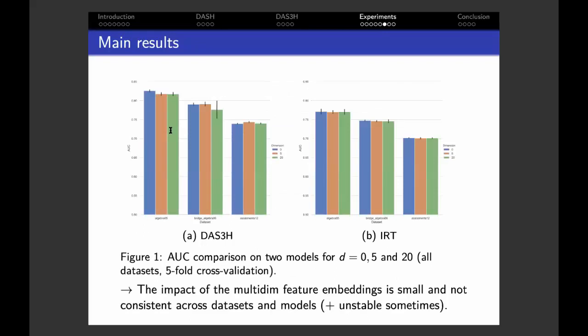As I told you previously, here on each figure, each group of three bars represents the predictive performance of the student model on a given dataset for every embedding dimension. For example, the blue bar for an embedding dimension of zero, orange bar for five, and green for twenty. Here you have the AUC metric of the DAS3H model on the Algebra 0-5 dataset with an embedding dimension of twenty. We can see that the impact of the multi-dimensional feature embeddings is quite small in every case and not consistent across datasets and models. For instance, an embedding dimension of zero gives a performance boost to DAS3H on Algebra 0-5, but nothing or almost nothing for IRT. It even seems to yield unstable model performances sometimes, for instance for DAS3H on the Bridge to Algebra dataset.